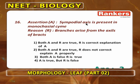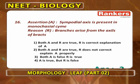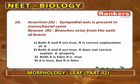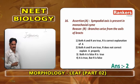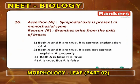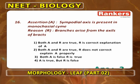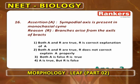Next: sympodial axis is present in monocasial cyme — correct, because flowers are produced opposite to the bracts, making it a pseudo axis. Reason: branches arise from the axils of the bracts — this is wrong; branches arise from opposite to the bracts, not from axils. So answer is 3: A is true, R is false.